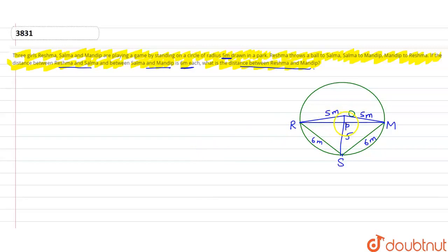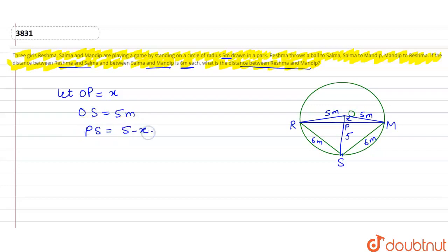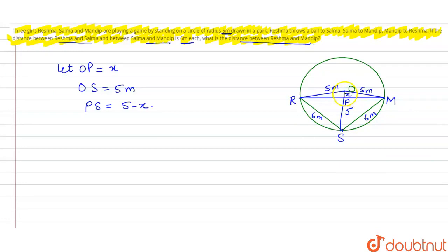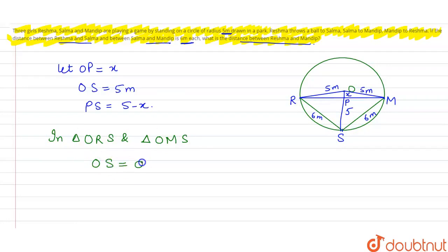तो अब हम क्या कर लेंगे? हमें निकालना है Reshma to Mandip का distance। मैं OP distance को X let करती हूँ। क्योंकि OS जो है वो 5 meter है, तो PS मेरे पास हो जाएगा 5 minus X। अब triangle ORS और OMS को देखें। In triangle ORS and triangle OMS — OS common है दोनों triangles में।